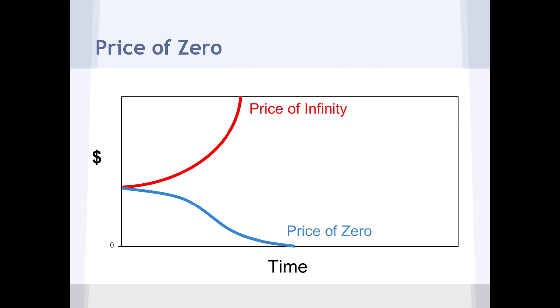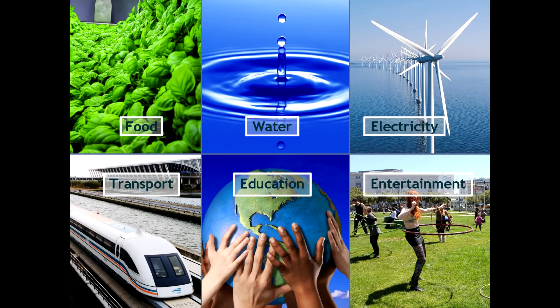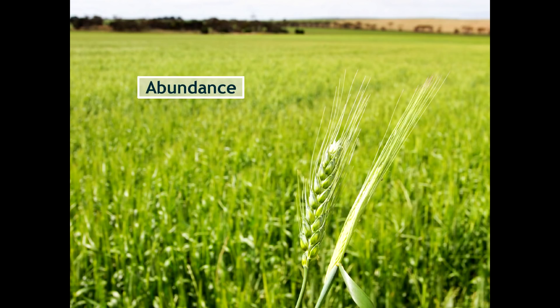Thankfully there's a third option — the price of zero. In a way, this is where we beat capitalism at its own game. And we get to transition to a future where at least the necessities of life are free to everyone on the planet. I'm talking food, water, electricity, transport, education, entertainment, health and more. But it's beyond that. The end game is to create such long-term abundance that there's no longer a need for money — a transition away from capitalism.